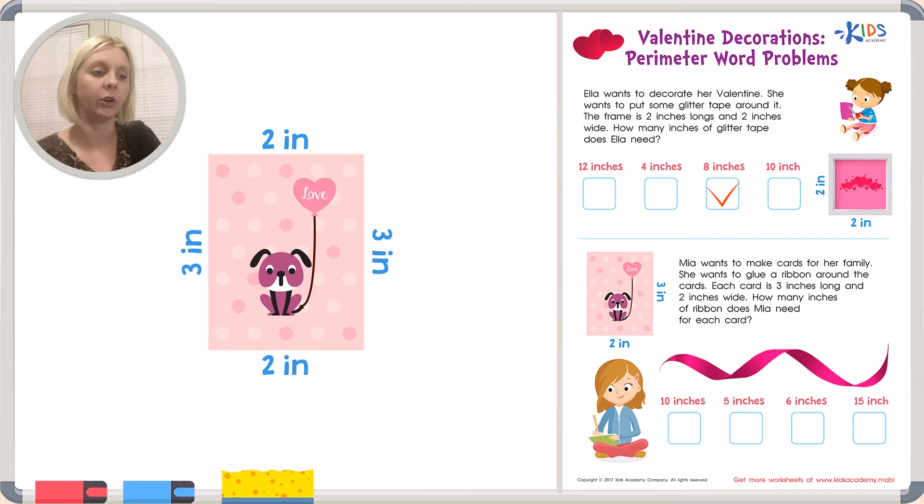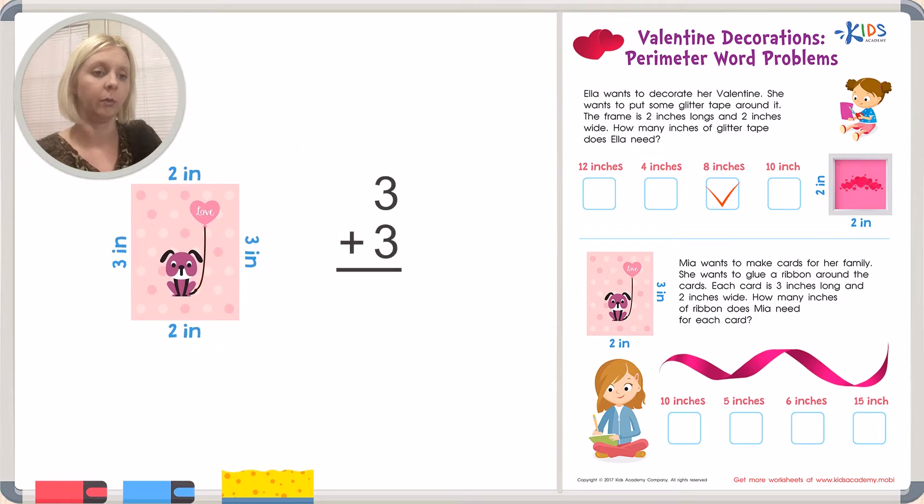So I know that this is 3 inches, this is 2 inches, this is 3 inches, and this is 2 inches. So what I'm going to do is I'd like to add up the length first. I'm going to add up the 2 length of the 2 sides. So I'm going to write that out. 3 plus 3, and you might already know the answer, but we are going to add it up here in a problem. And that is 6, right? So I'm going to write that right over here. 6.